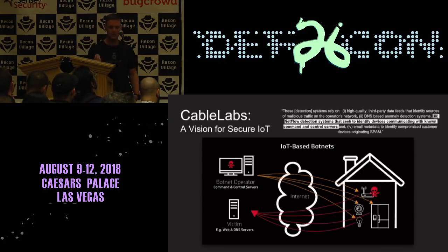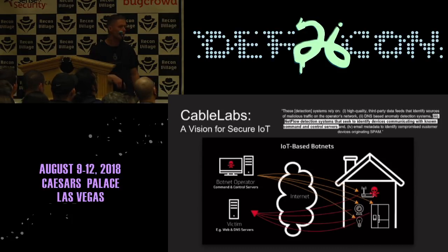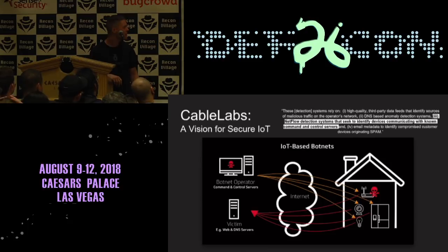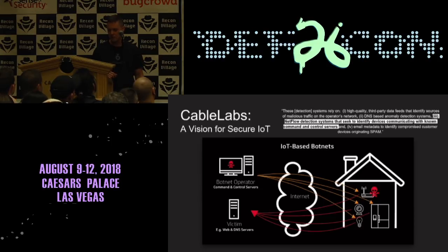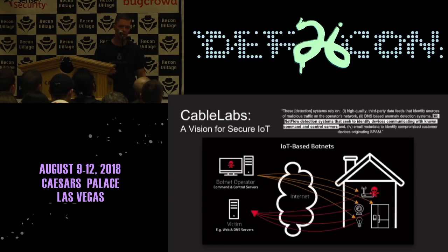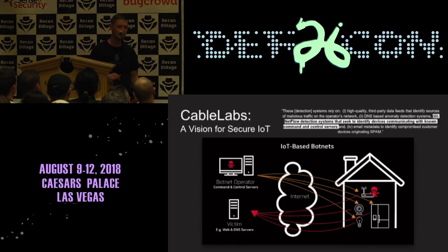I came across specifically focusing on internet of things devices — that's the new hotness right now. I'm a big fan of Raspberry Pis and cheap, affordable, approachable programming and tools. Cable Labs posted a story a couple years ago basically saying that net flow detection systems seek to identify devices communicating with known command and control systems. This is one of their primary means of detecting botnets and malicious activity using net flow traffic analysis.